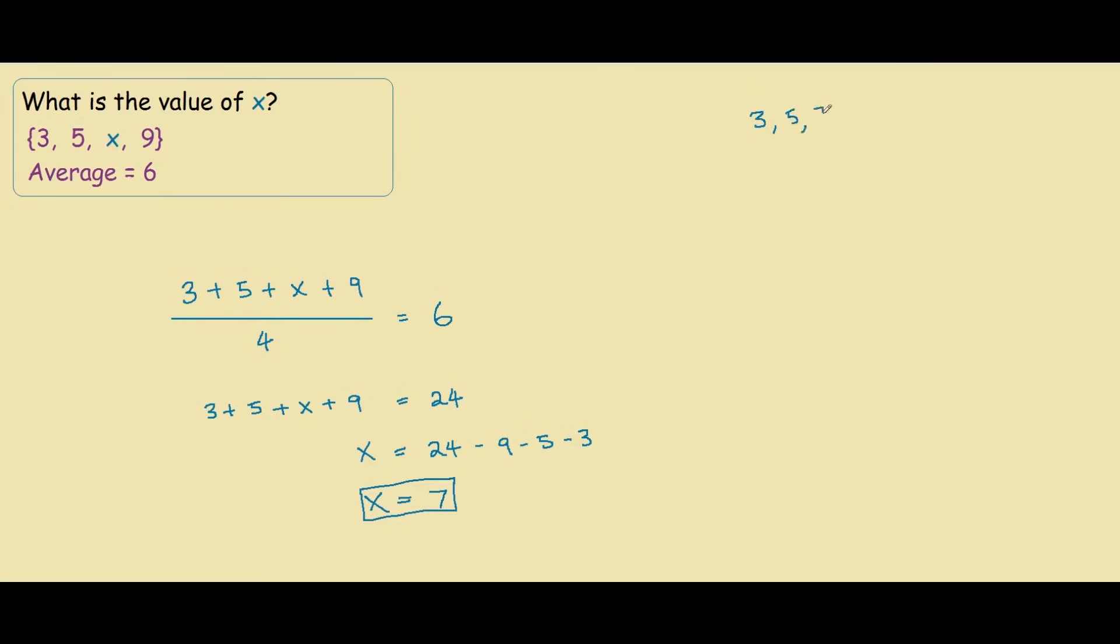If we plug it back into our average equation, we have 3 plus 5 plus 7 plus 9 divided by 4.